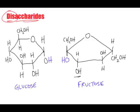So what we're going to do is combine these two. We're going to combine glucose, one monosaccharide, with fructose, another monosaccharide. When we put these two together, they are going to form the following disaccharide, and it will form what we call sucrose.